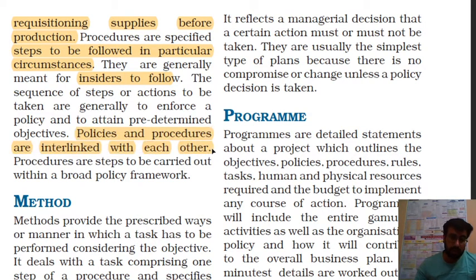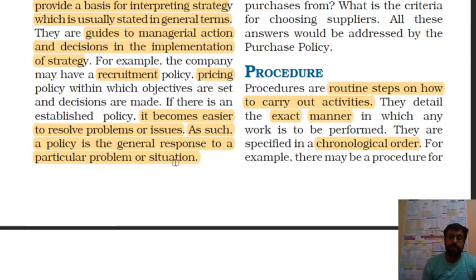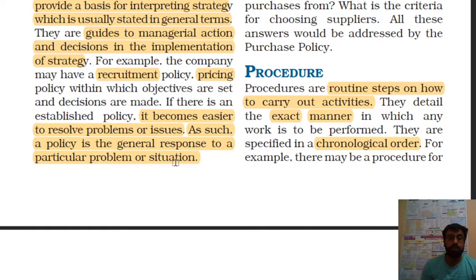Let's look at how policy and procedure are interlinked. A company makes an organizational policy that no supplier can be finalized without top management approval. Now the company has also made a procedure based on that policy. Suppose the company needs to purchase something — raw material — and there are many suppliers available. To select the best supplier, all steps must go through top management. So a procedure has been created.